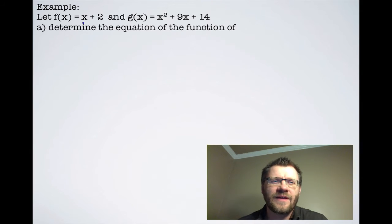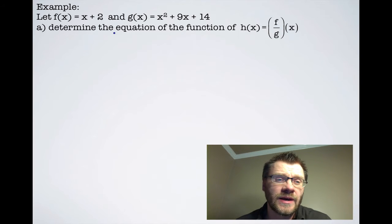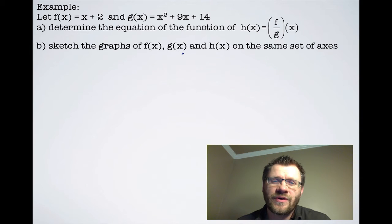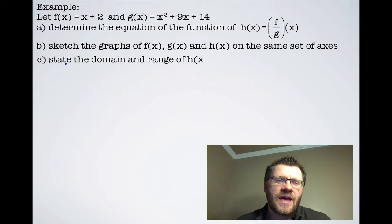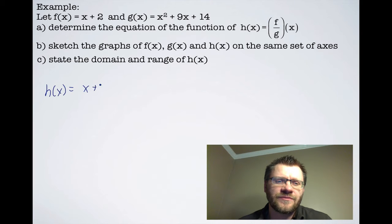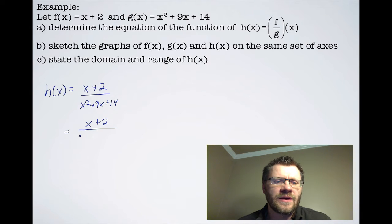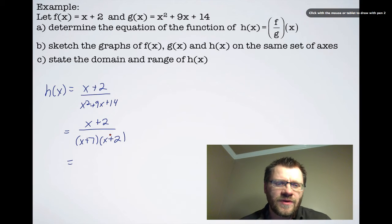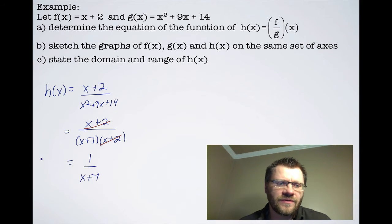Example 2: let f(x) = x + 2 and g(x) = x² + 9x + 14. Determine h(x) = (f/g)(x), sketch the graphs of f, g, and h on the same axes, and state the domain and range. So h(x) = (x + 2)/(x² + 9x + 14). Factoring the denominator gives (x + 7)(x + 2), and the (x + 2) factors cancel, leaving h(x) = 1/(x + 7).